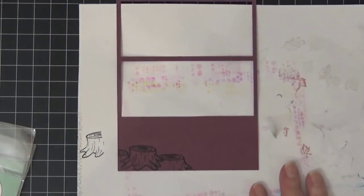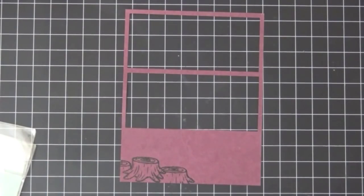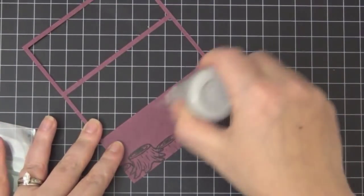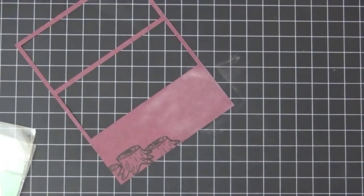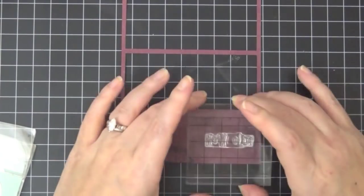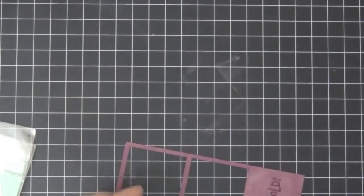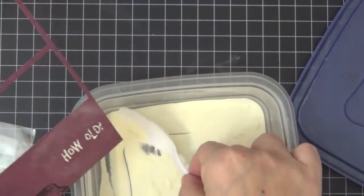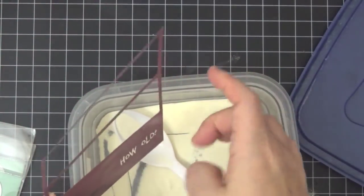And now I want to go ahead and stamp my sentiment. Now I wanted to emboss it white, so I'll be prepping my cardstock here using the EK Success Powder Tool. And then I'm going to go ahead and stamp the sentiment. And as you can see here we got a really crisp impression, but I may have rocked it a little bit as I was stamping it, so I had to kind of fix that.